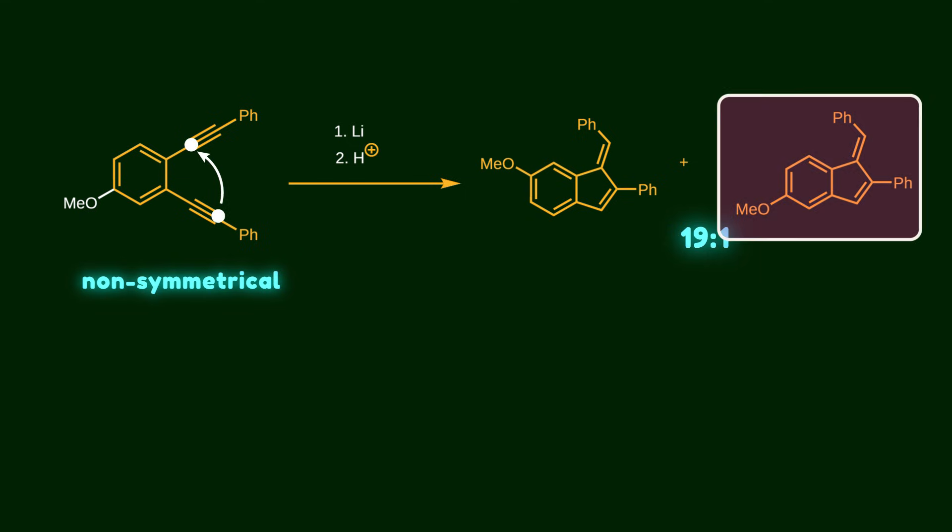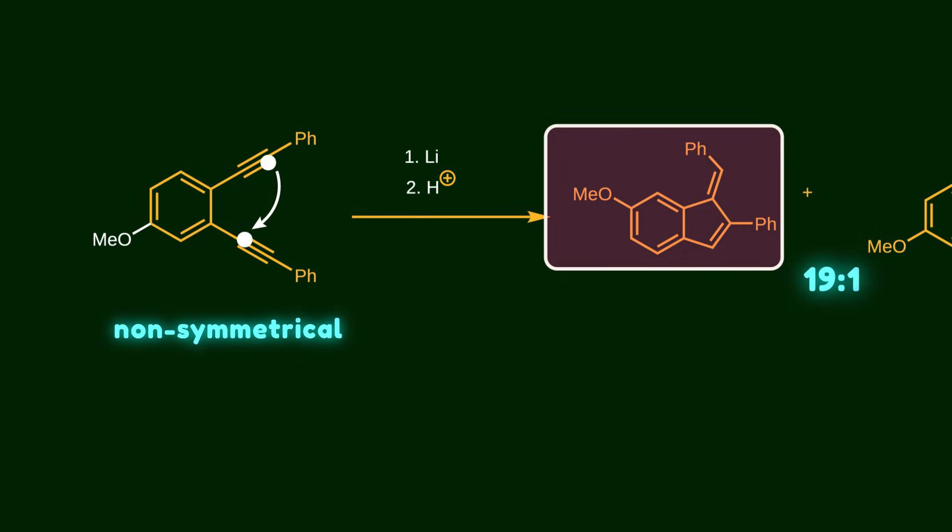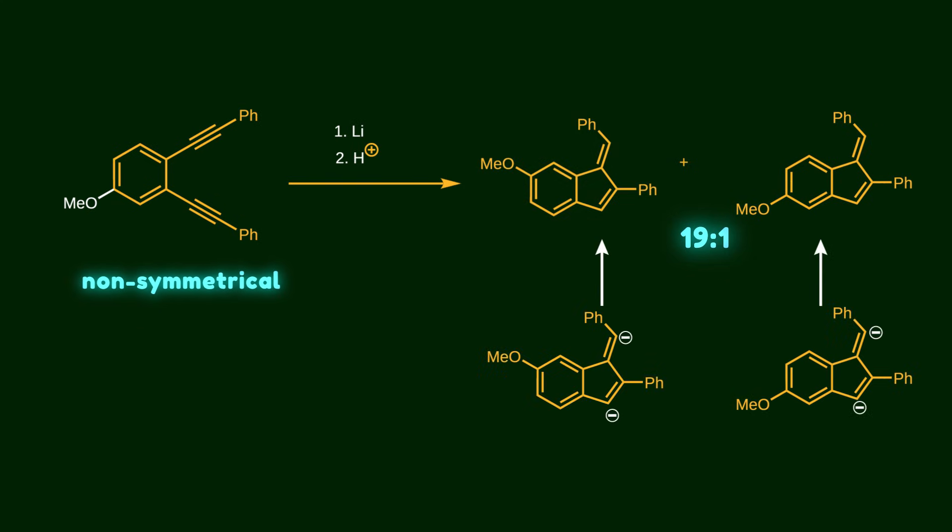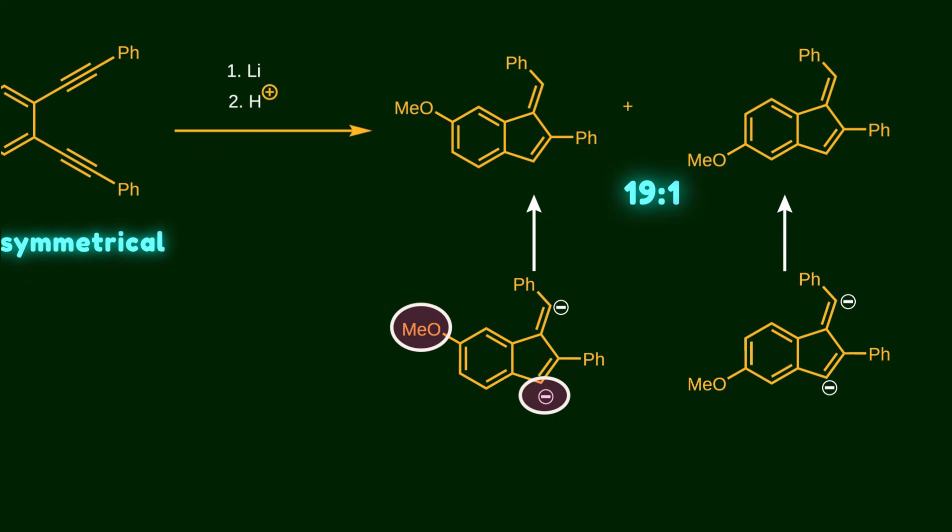In the first option, this pi bond attacks this carbon atom to construct the 5-membered ring. In the second option, the pi bond attacks the opposite carbon atom. Now let's take a look at the dienion species in each pathway. In the first one, the negative charge ends up parallel to the methoxy group. But in the other pathway, the anion at the endocyclic ring cannot interact with the methoxy group.